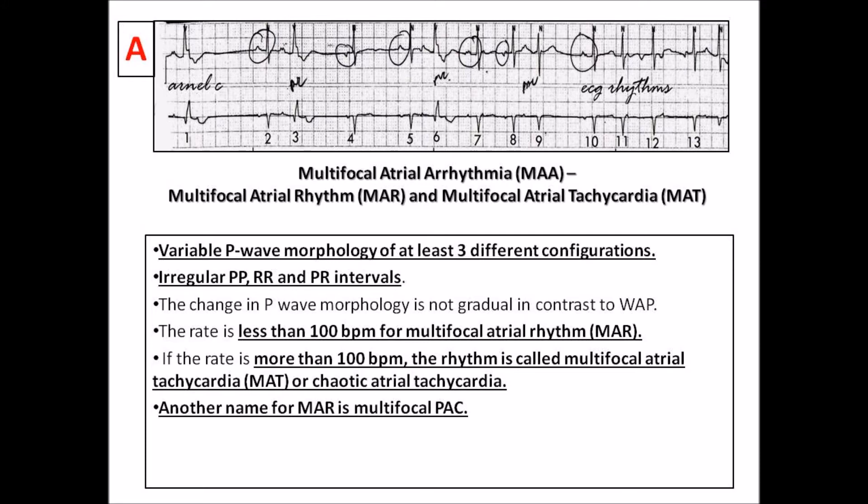Some of the conducted P-waves are wide because one of the bundle branches is still in the refractory period. The electrical impulse is blocked on one of the bundle branches, which delays cardiac conduction, thereby creating a wide QRS. This intermittent block is called aberrancy.